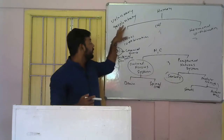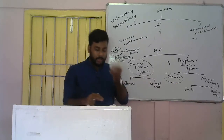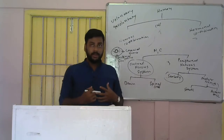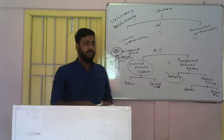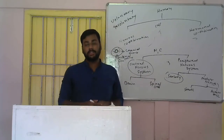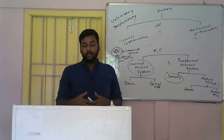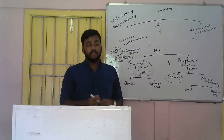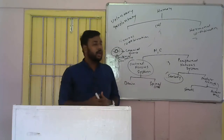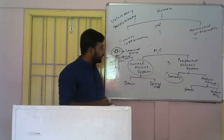Involuntary movements are those not under your control. For example, the beating of your heart — it is not under your control and it will beat until your last breath. It is controlled by the autonomic nerves. The movement of organs like oesophagus and stomach, which constantly perform peristaltic movements — these are also controlled by the autonomic nervous system.